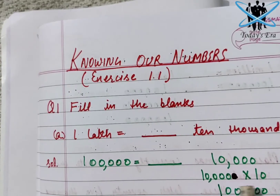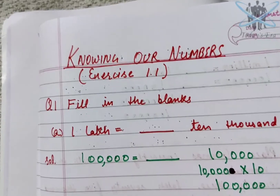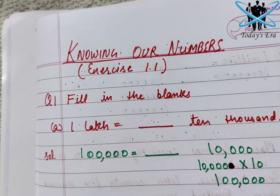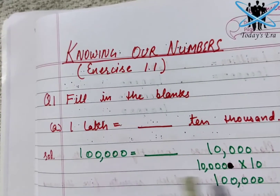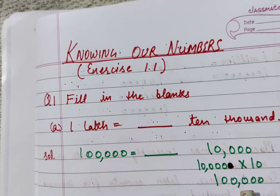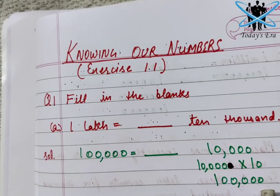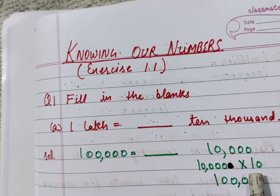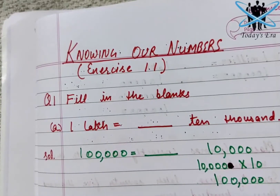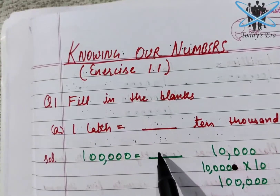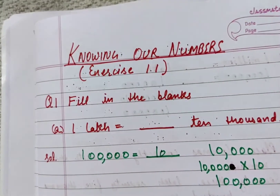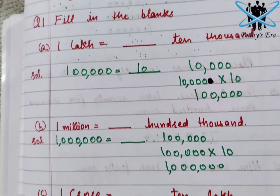Since one lakh has five zeros and ten thousand has four zeros, we need to multiply ten thousand by ten — that way our result will become one lakh, and both sides will have five zeros. So the number that gives us one lakh when multiplied is ten. Your answer here is 10 — fill in 10.